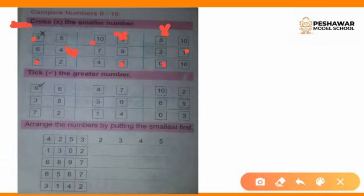Now we will take the greater number. We have already done the smaller number, so now we will tick on the larger number. Again we have 2 blocks — in one block we have the smaller and in the other block we have the larger. Now we will tick on the large number.